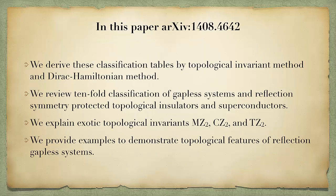I hope that this video is tantalizing enough. Even without reading our paper, people can understand our classification tables. In this paper, we derived these classification tables by the topological invariant method and the Dirac method. We reviewed the tenfold classification of the gapless system and the reflectional symmetry protected topological insulator and superconductor classification. Furthermore, we explained exotic topological invariants: NZ2, CLE2, and TZ2. We provide examples to demonstrate topological features of the reflectional gapless system. Finally, if the citation reaches 100, I would like to make another video talking about the details of this 27-page paper.